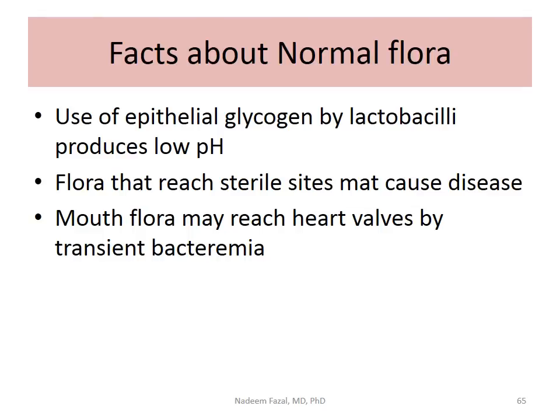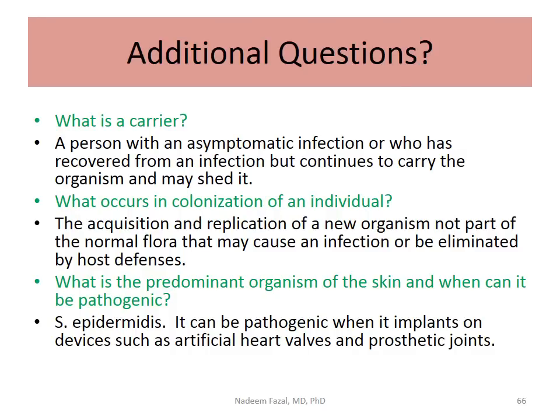On the other end, bacteria from mouth flora may reach heart valves and cause transient bacteremia. Some additional key questions: What is a carrier? A person with an asymptomatic infection or who has recovered but continues to carry the organism and may shed it — for example, a typhoid carrier or S. aureus carrier. In colonization, you can acquire and replicate a new organism that is not part of your normal flora, and it may cause infection or be eliminated by host defenses.